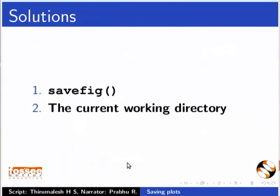And the answers are: To save a plot, we use the savefig function. If we save a file without complete path, it gets saved in the current working directory.